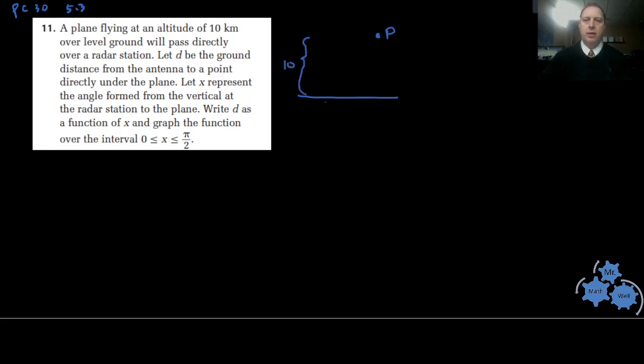Here's the ground, and here's the plane. It's 10 kilometers above the ground. There is a radar station that it has passed over, and I'm going to put the radar station right here. The plane is not directly above the radar station necessarily because it's passing over, so it can be anywhere right now.